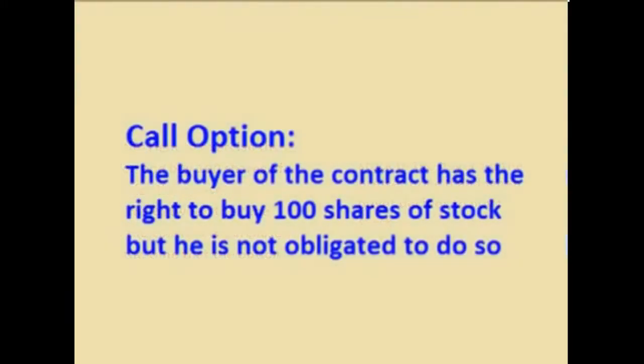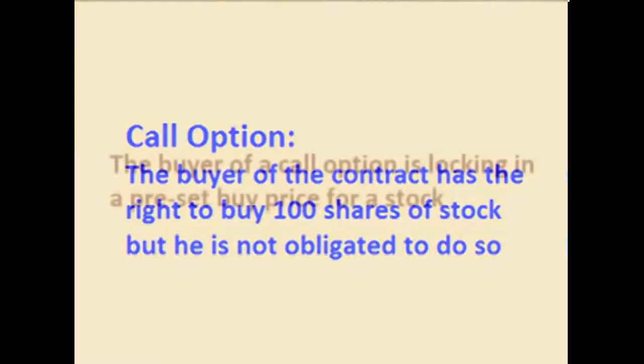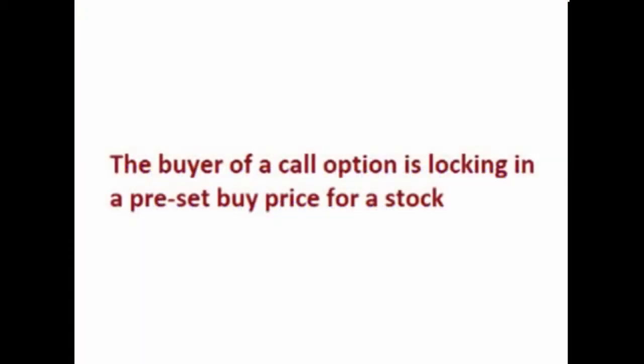if and when the option buyer decides to buy it, up until the time the contract expires. The buyer of the option contract has the choice of whether or not he wants to buy the stock from the option writer. His contract says he has the right to do so, but it is his option, which is why they are called options. In other words, when someone buys a call option, they are locking in a preset buy price for a stock.